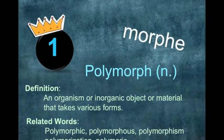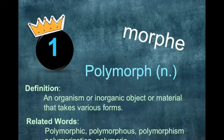The first root is morph. Morph means forms. Polymorphic is an object that has various forms. Related words include polymorphic and polymorphous, meaning the existence of something in several different forms. All the words have morph in them, so all of them are related to forms.